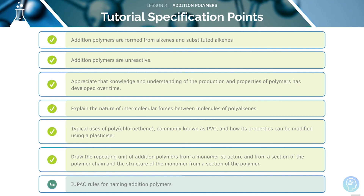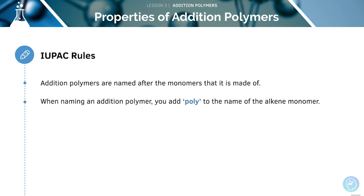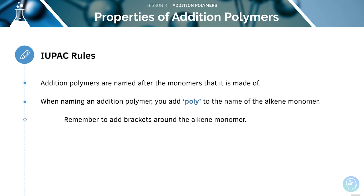Finally, we will have a look at some rules for naming polymers. Addition polymers are named after the monomers that they are made of. When naming an addition polymer, you add 'poly' to the name of the alkene monomer. Remember to add brackets around the alkene monomer. For example, the addition polymer of ethene would be poly(ethene).